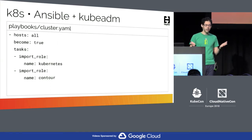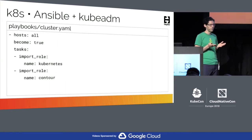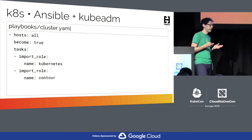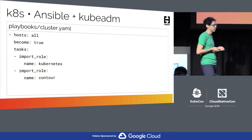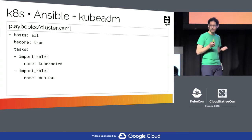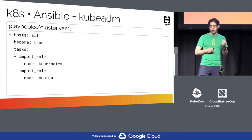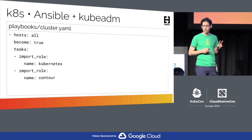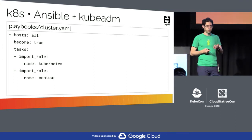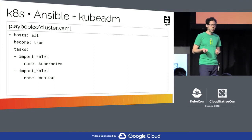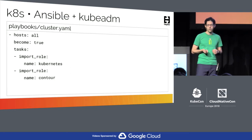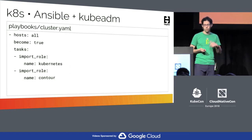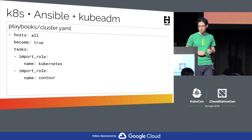To put all of this together, I have a playbook. In this case my playbook is called 'cluster,' and I want to run two roles with it. The first one I just took you through examples of. The second one installs the Contour ingress controller, which will be part of the demo I'll be showing in a minute.